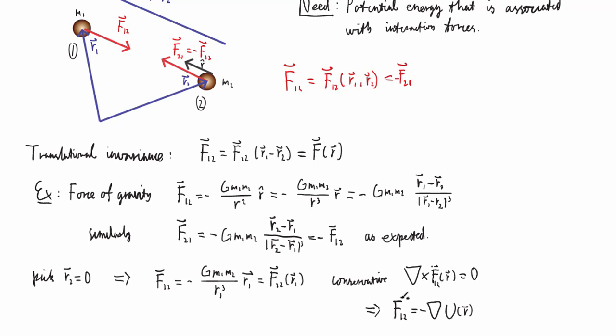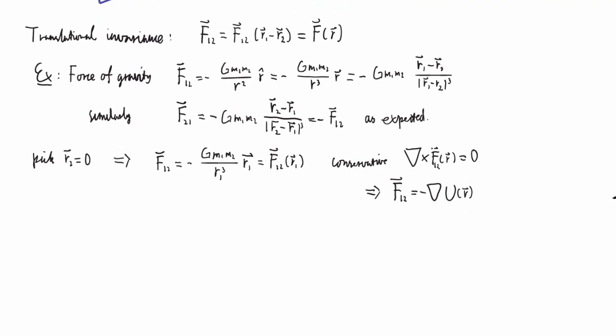So now we've been able to write the force here, the force on particle one from particle two, as the gradient of a potential. It's not quite general, though, because for this formula to work, we have to have R2 equal to zero. You have to place the origin at this particle. And that works when you only have two particles to work with, but when you have more, you can't do that anymore. So to generalize this, we have to translate back.